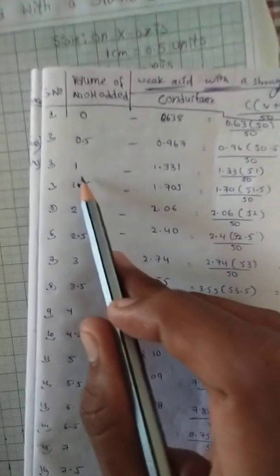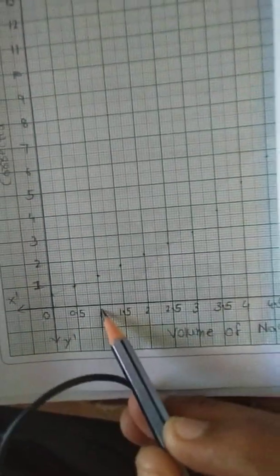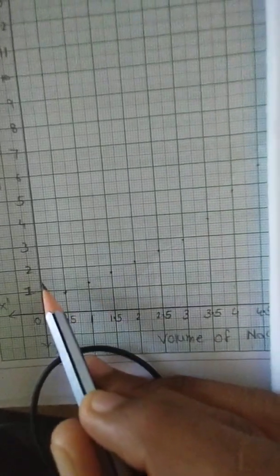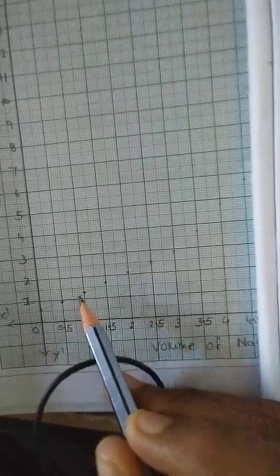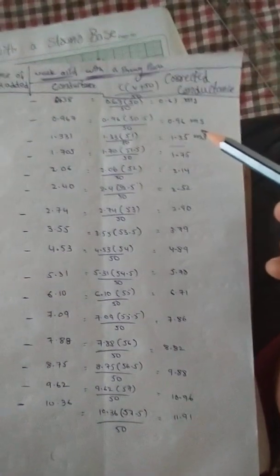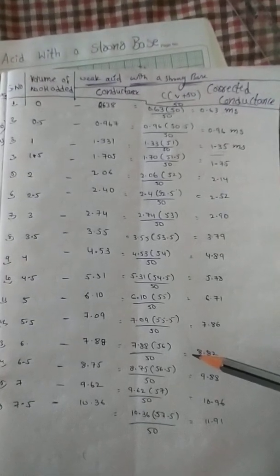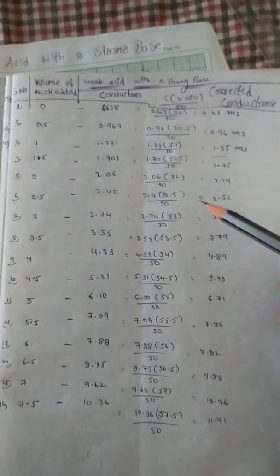For 1 ml of sodium hydroxide, the obtained corrected conductance is 1.35 mS. Similarly, for all the remaining values, the points are plotted on the graph.